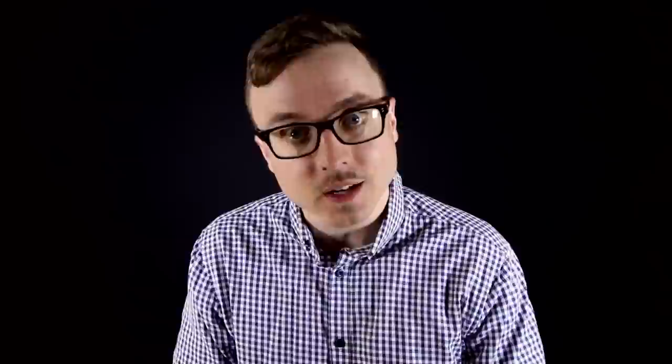These starfish-like micro grippers perform biopsies. Developed at Johns Hopkins University, the star-shaped devices can measure less than a millimeter from tip to tip. The arms close around tissue when exposed to a body's heat, performing a miniature biopsy.